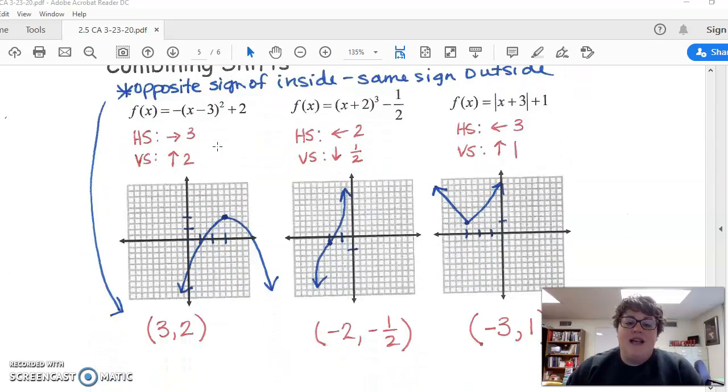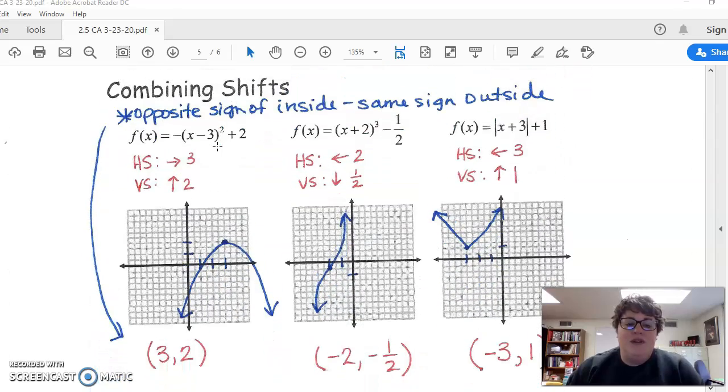We can combine them. This last one is what you need to understand how to do. The A on the front determines if the graph opens up or down. You can look at the formula to identify the graph type—is it linear, cubic, quadratic, or absolute value? Then determine the horizontal shift and vertical shift. Remember, it's always the opposite sign of the inside, same sign of the outside. This creates the vertex, so you can find that central point and make your graph from there.